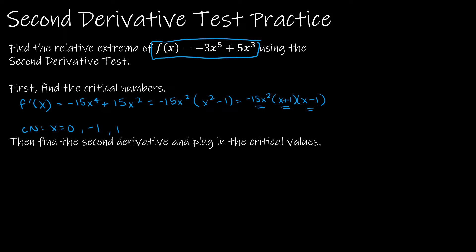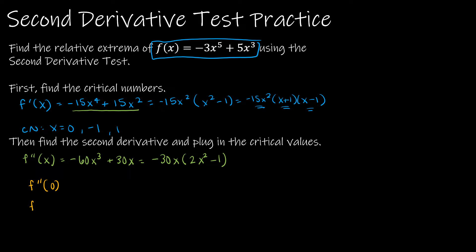Now we're going to find the second derivative. When finding f''(x), it's easiest to go with the unfactored expression: -60x³ + 30x, which simplifies to -30x(2x² - 1). All I have to do now is evaluate f''(0), f''(-1), and f''(1).